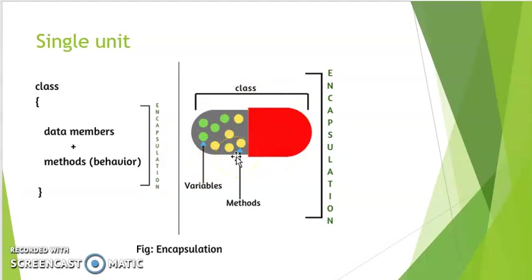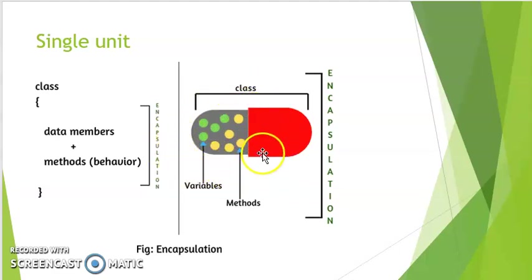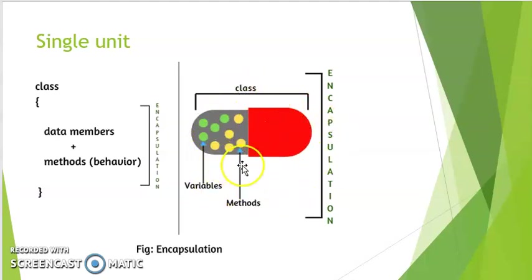In encapsulation, in our code, there are different variables and methods in the class. These variables and methods are just like the medicine inside the capsule, and the class works like the capsule — the outer shell. So if you can declare a class with variables and methods, then you have implemented the single unit concept of encapsulation.